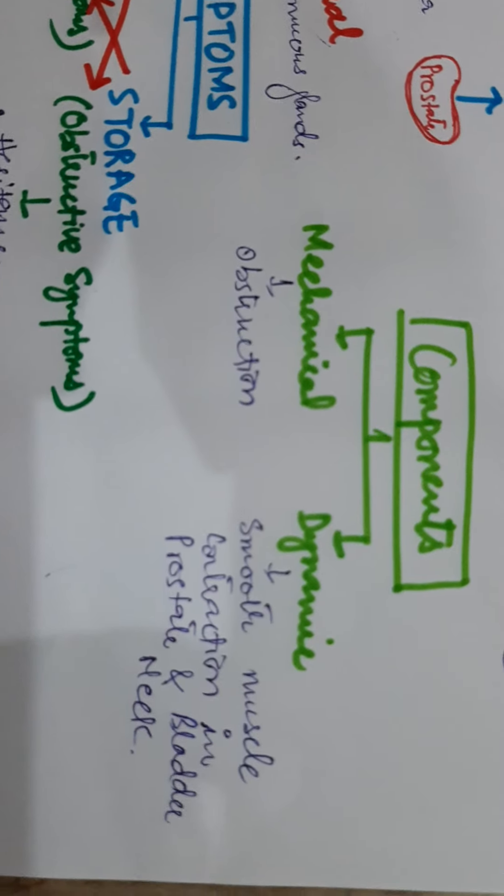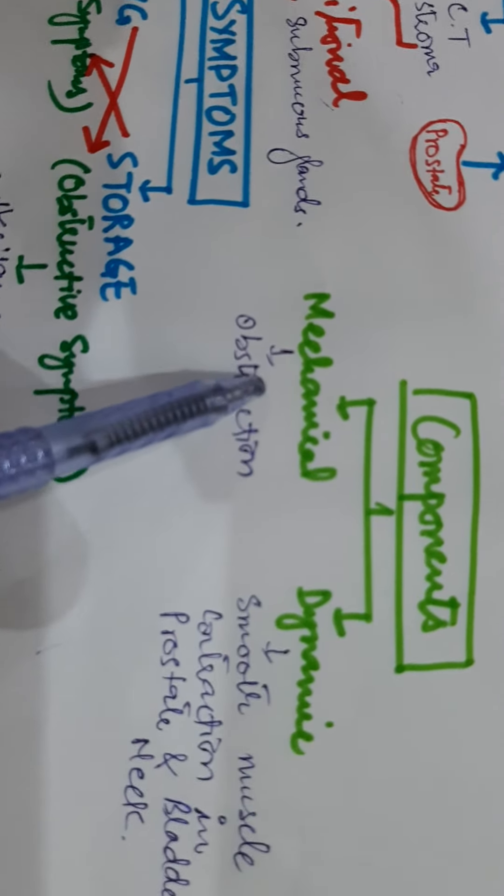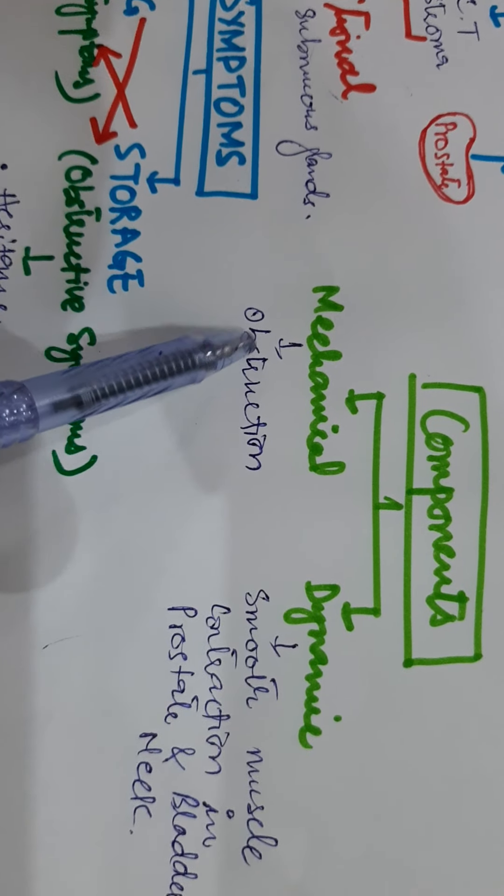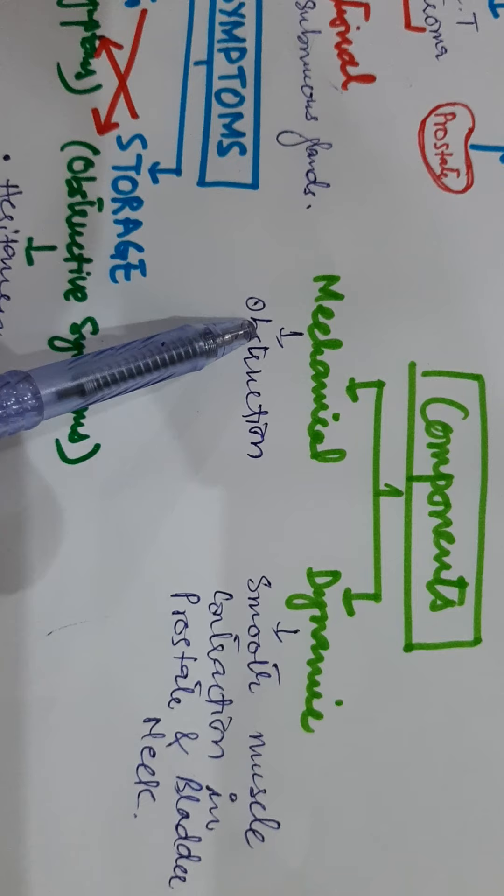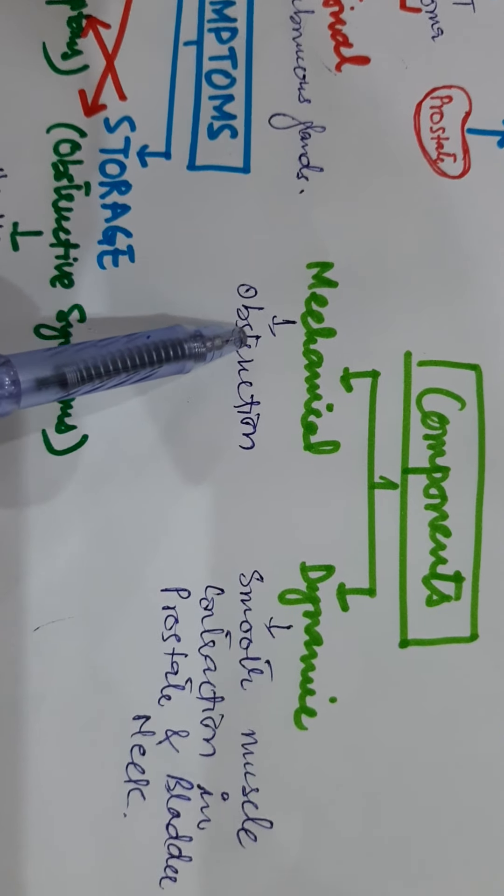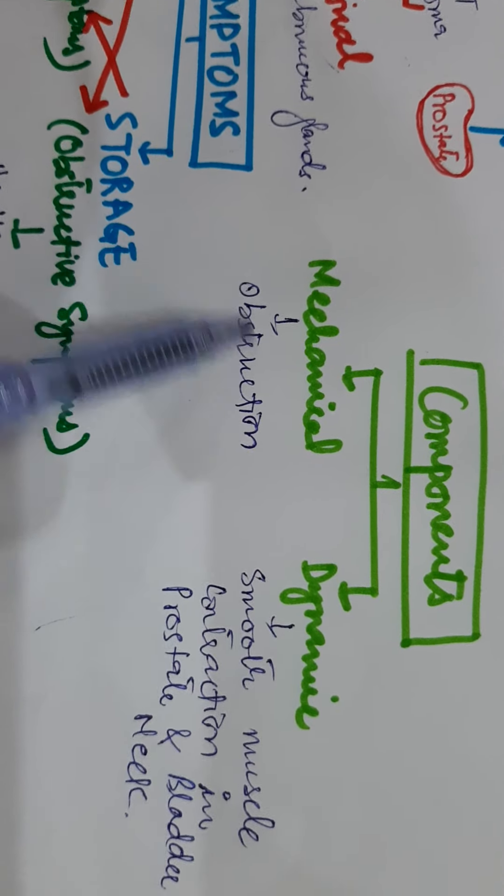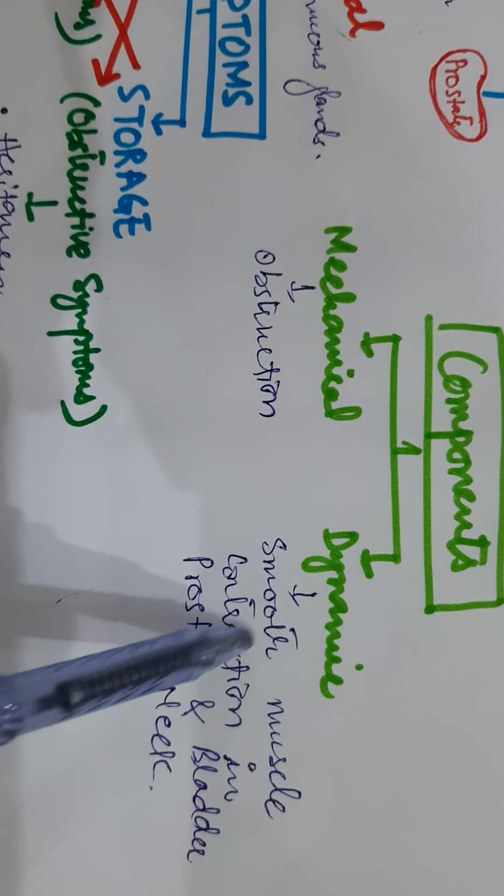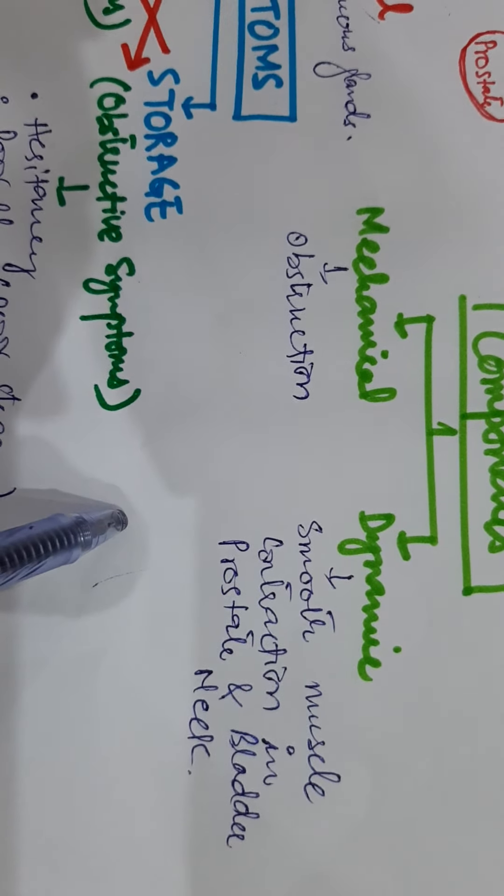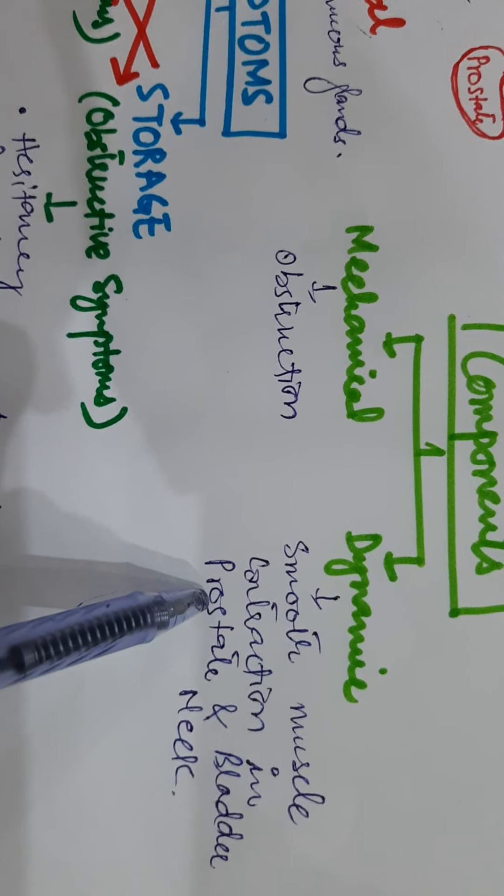It has two components: mechanical and dynamic. Mechanical components of BPH are produced by the prostate and cause mechanical obstruction of bladder outflow and symptoms of BPH, which are lower urinary tract symptoms. Dynamic component is produced due to smooth muscle contraction in the prostate and bladder neck, which also leads to resistance to outflow of urine.